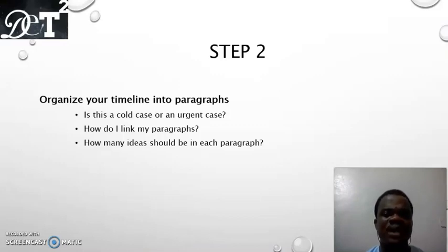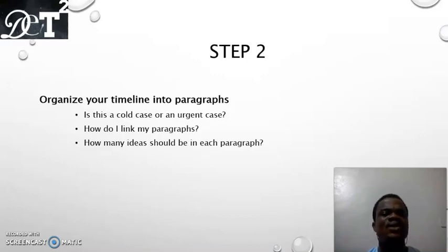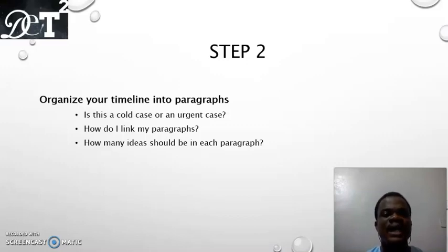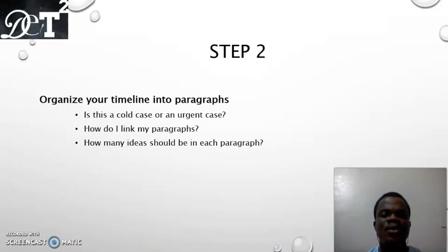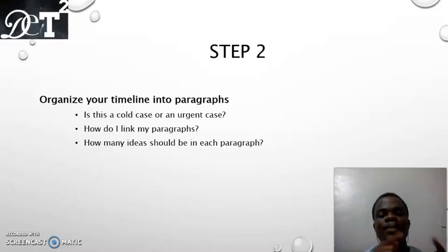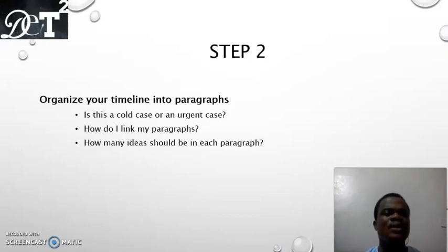Another thing to consider is how many ideas should be in each paragraph. Ideally, one idea per paragraph. However, if you only have one sentence for a particular idea and you don't want a one-sentence paragraph, you may combine it with another related idea — for example, past medical history and drug history can go side by side. If you combine past medical history and social history, you'll need transitional phrases to connect them successfully, as we'll see with an example.